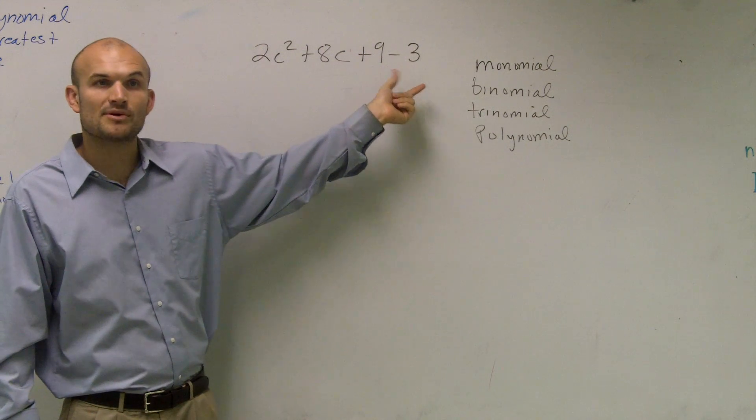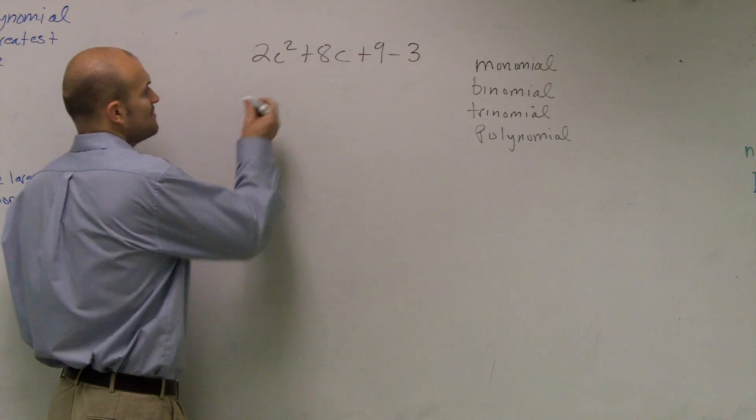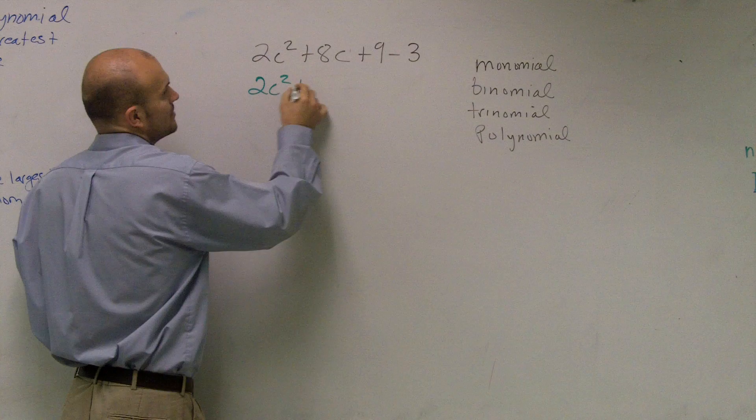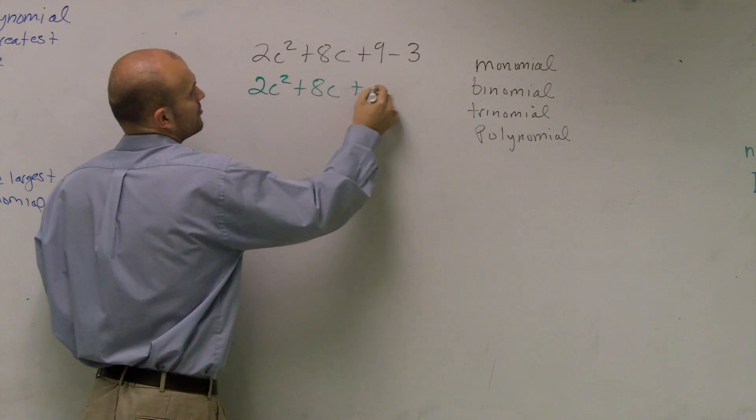However, these are two numbers, so I can combine these two to provide me with 2c squared plus 8c plus 6.